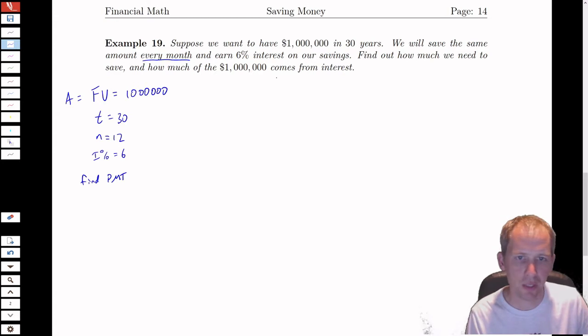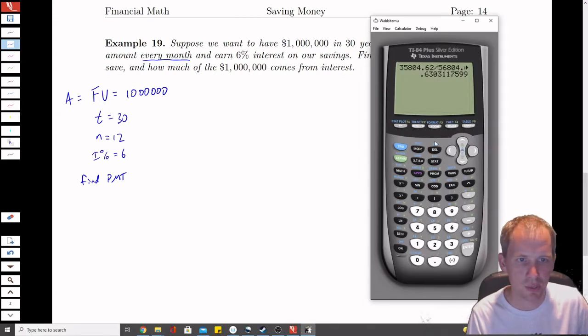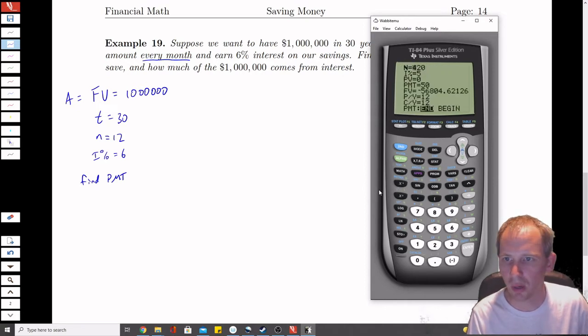So let's go ahead and jump right into our finance solver. And we're going to plug in what we know. So remember that capital N is little n times t, so that's going to be 12 times 30. The interest percentage is 6%.